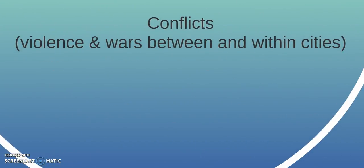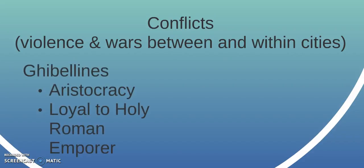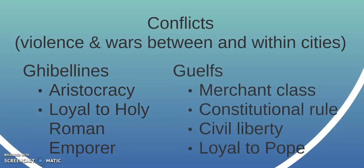And there was a great deal more civil liberty than had been available in the past. Even within this setting, you had a lot of conflicts — violence and wars between the cities, between factions within cities. One of the conflicts that really spread into Italy, out of the area around what would today be part of Germany, is a conflict between the Ghibellines and the Guelphs. The Ghibellines were more associated with the aristocracy and were loyal to the Holy Roman Emperor, while the Guelphs came out of the merchant class, enjoyed constitutional rule and civil liberty, and were more loyal to the Pope.